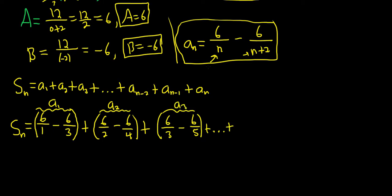Plus. A sub n minus 2 means we plug in an n minus 2. So that's going to give us 6 over n minus 2. Notice how I put parentheses around each of the a's. It just adds a bit of clarity. Minus. When you plug in an n minus 2 for your n, you'll get n minus 2 plus 2. So you're just going to get n. So it's 6 over n plus. And plugging in n minus 1, you get 6 over n minus 1. Minus. And then 6 over n minus 1 plus 2 is n plus 1. Plus n. And then the last one would be a sub n. 6 over n minus 6 over n plus 2.